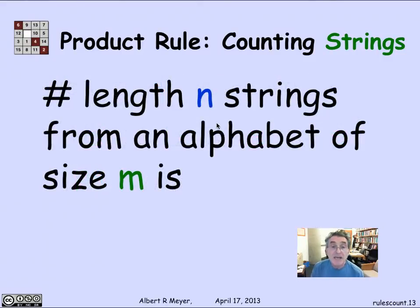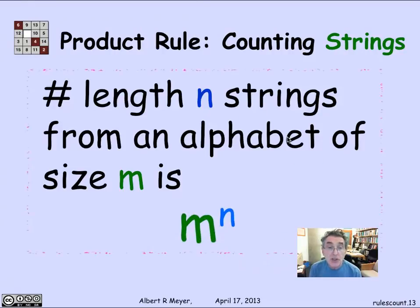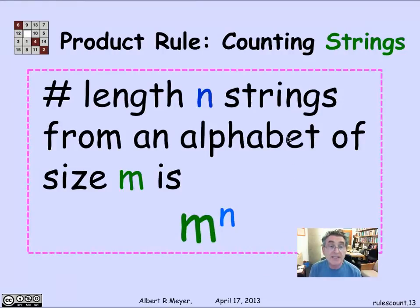So in general, if I look at strings of length N, whose elements are from an alphabet of size M, the total number of such strings is M to the N.